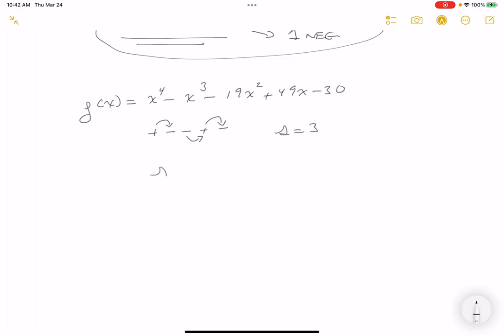So what do I know? s minus the number of positive roots, well, s is three, so it's going to be three minus p.